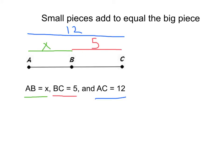Well, remember, the small pieces add to the big pieces. That would mean that x plus 5 would be equal to the big piece, 12. From here, we could solve for x.